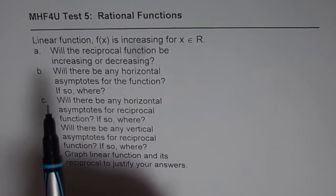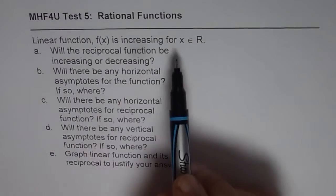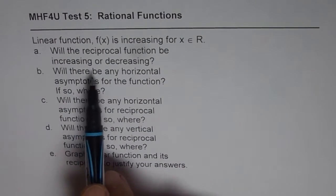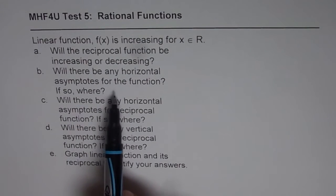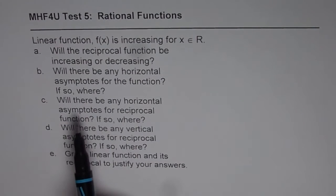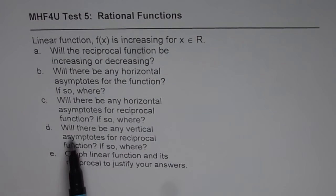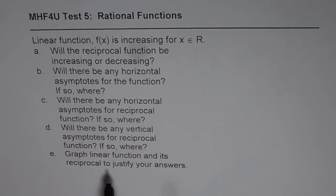The question before us: a linear function f(x) is increasing for x belonging to real numbers. Will the reciprocal function be increasing or decreasing? Will there be any horizontal asymptote for the function — if so, where? Will there be any horizontal asymptote for the reciprocal function — if so, where? Will there be any vertical asymptote for the reciprocal function — if so, where? Graph the linear function and its reciprocal to justify your answers.